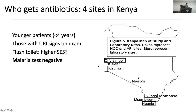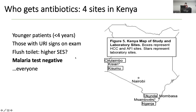A project I was involved with as a resident was a large study in Kenya looking primarily at febrile children with undifferentiated illness to study arboviral diseases, but we also looked at clinical management and antibiotic use. The four sites were mostly on the lake side and the coast — areas with high malaria endemicity. We found that patients most likely to get antibiotics were younger children under four, those with upper respiratory signs, and the biggest predictor was testing malaria-negative. Basically, that translated to everybody getting antibiotics.